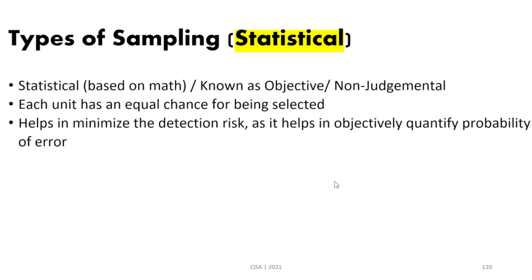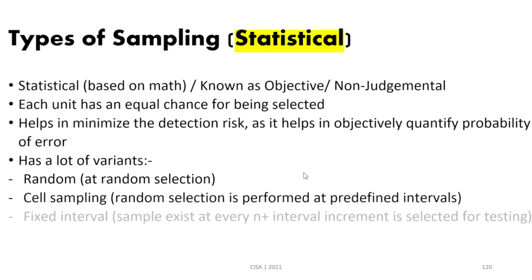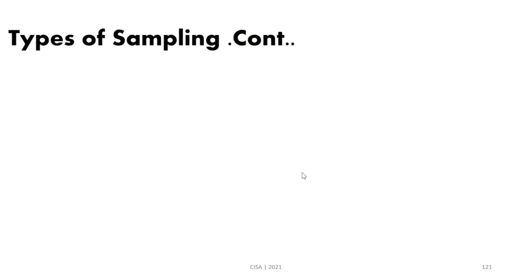Statistical sampling has many variants. These include random sampling, cell sampling, and fixed interval sampling — just for your knowledge, as you are not expected to master sampling topics. You need to understand the major characteristics of different sampling techniques and when to use each one. Statistical sampling helps minimize detection risk, is based on math, and has variants including random, cell, and fixed interval sampling.